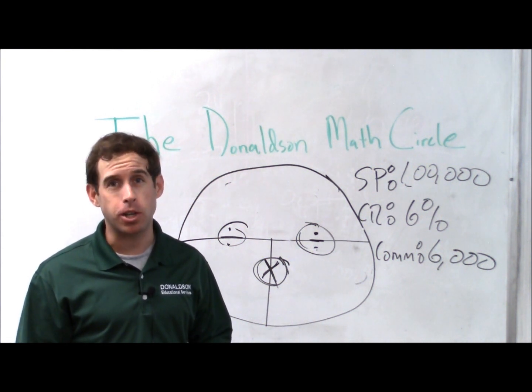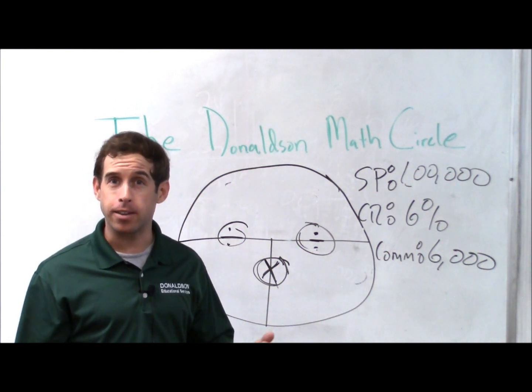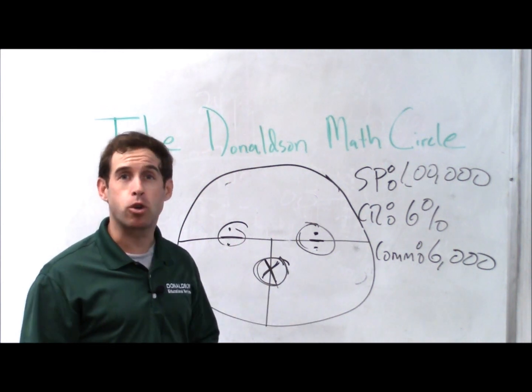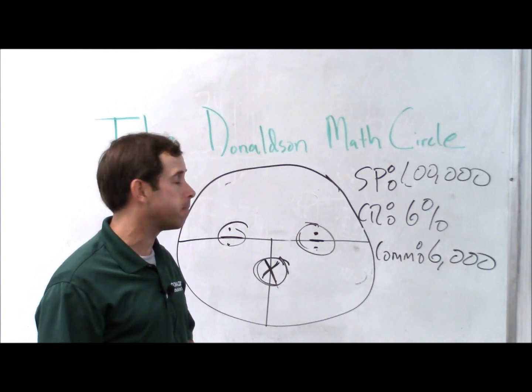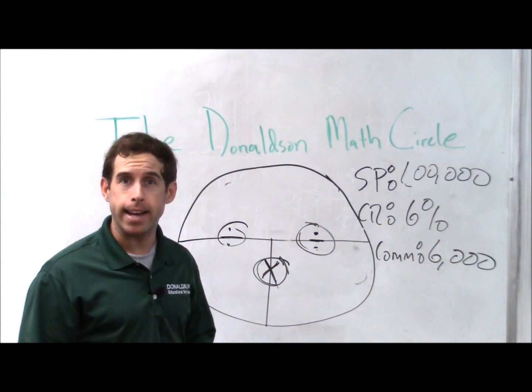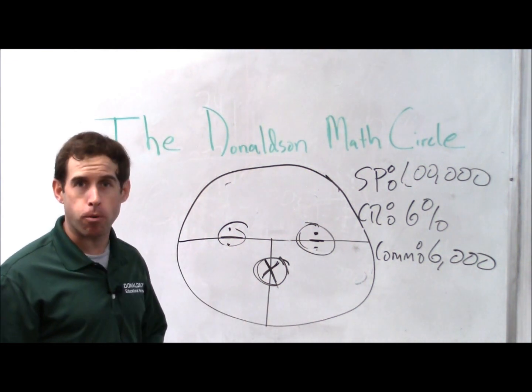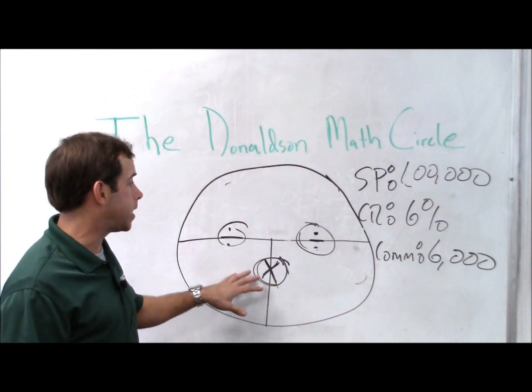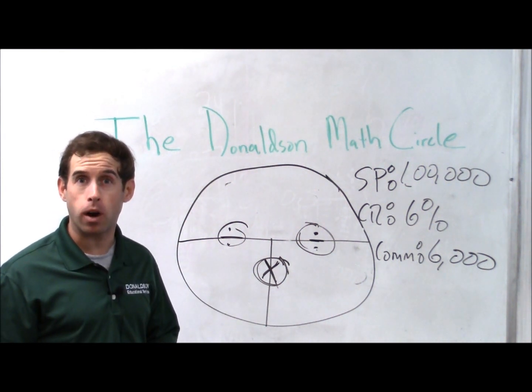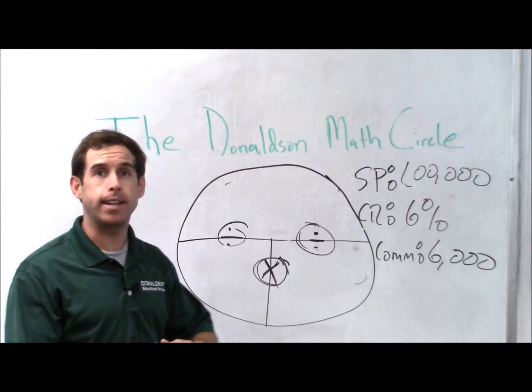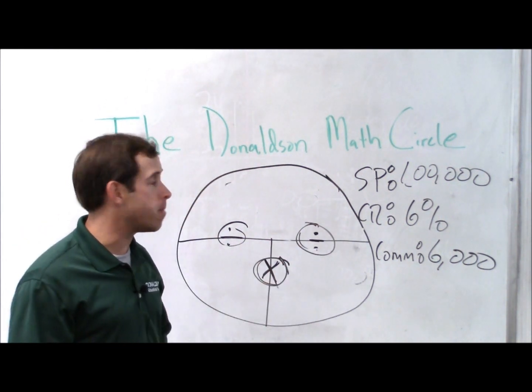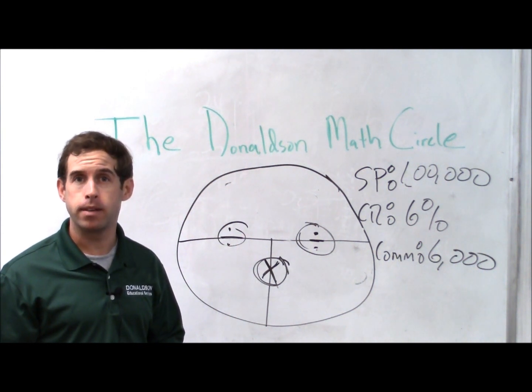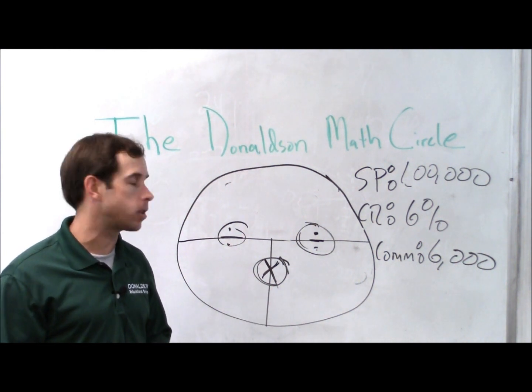And really, this is the secret sauce, so to speak, of how Donaldson students experience such great success on the math portion of the state real estate exam. And the reason for that is it's based on algebraic functions, or even T bars that you may have seen before. And the purpose here is to take dozens of formulas that you may have to remember on the test and combine them into one simple method.